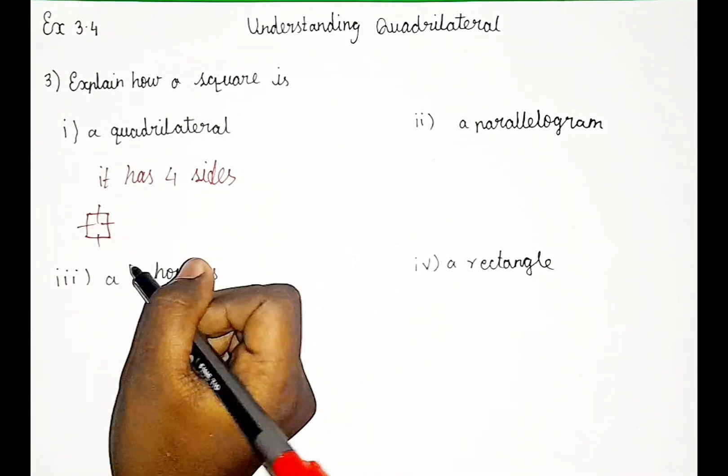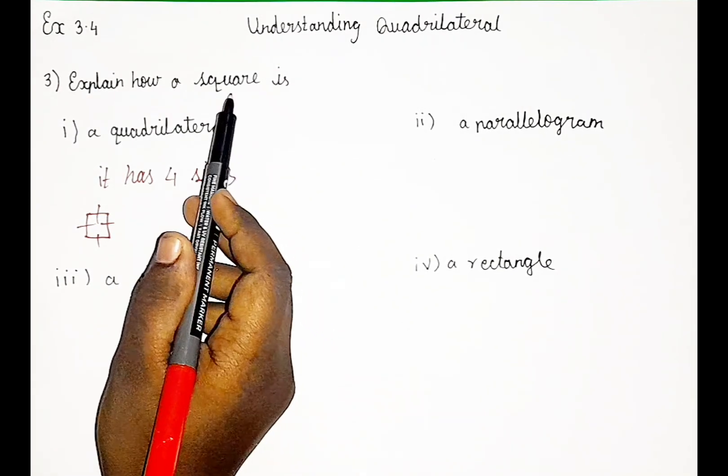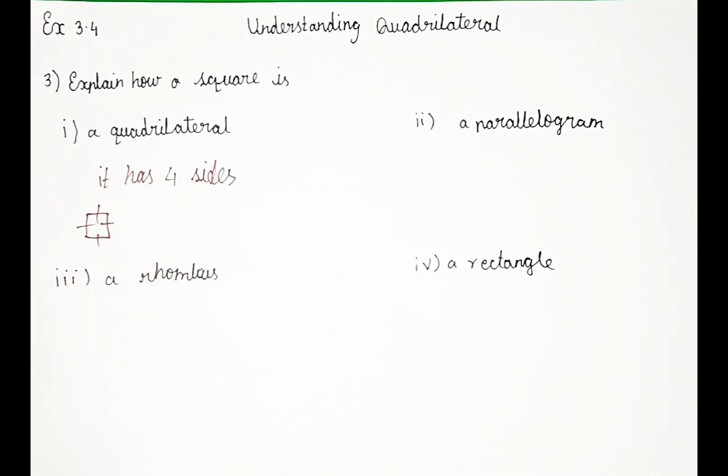In square also we have 4 sides. In quadrilateral also we have 4 sides. That's why a square is also a quadrilateral.